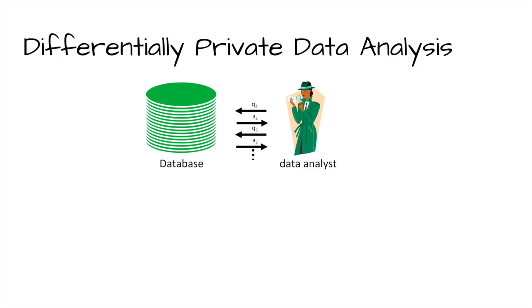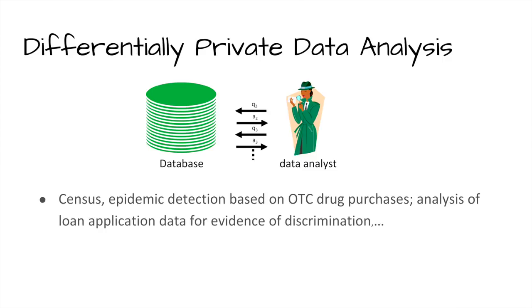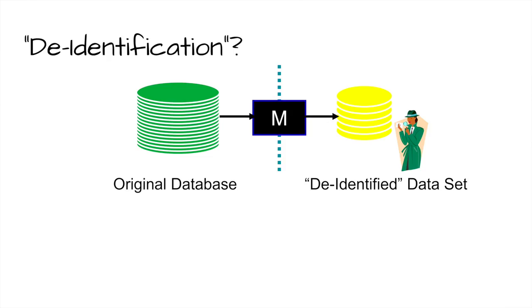The question could be very complicated — a multi-part study or a computer algorithm. We abstract it away: question, answer, question, answer. This very general model applies to the census, epidemic detection based on over-the-counter drug purchases, and analyzing loan application data for evidence of discrimination. There can be all sorts of rich things in this data set, and we want to do these things while preserving privacy. This is a problem that's quite old; we can find relevant results from 1965.